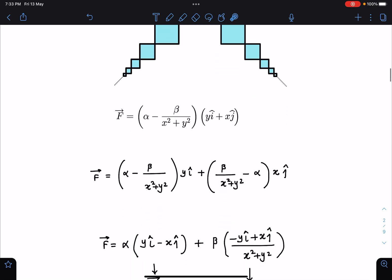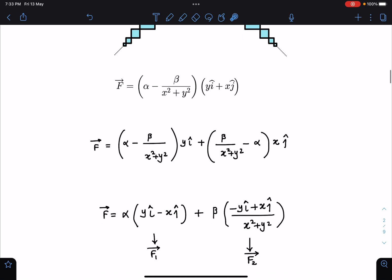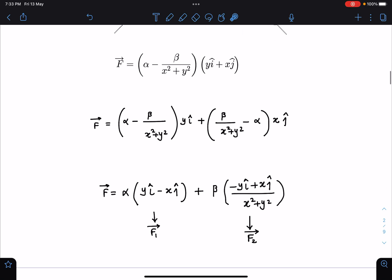The moment I do this I'll be getting alpha times y i-hat minus x j-hat and beta times minus y i-hat plus x j-hat by x squared plus y squared. When we do this, a lot of familiar expressions will be coming in mind. If you remember, separately on this channel and my classes also I have been discussing about these forces. These are very special type of forces here you can see.